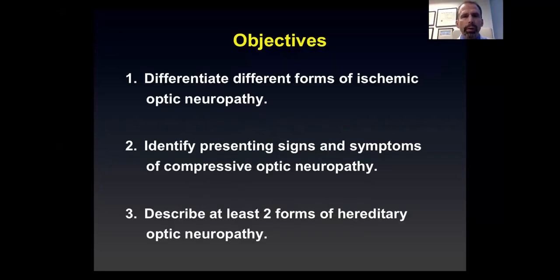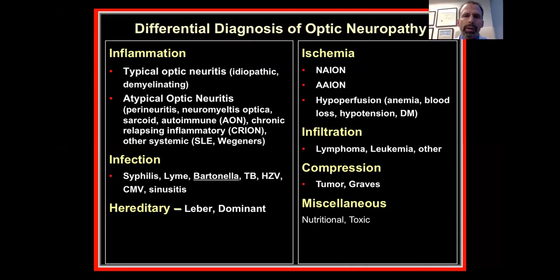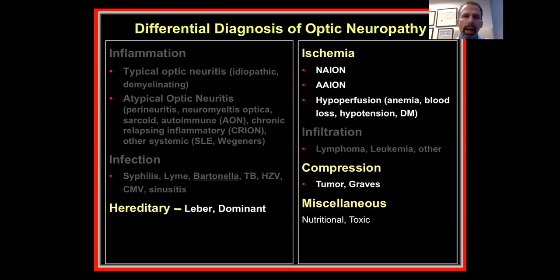My objectives for this webinar: when we're done, you'll be able to differentiate different forms of ischemic optic neuropathy, identify presenting signs and symptoms of compressive optic neuropathy, and describe at least two forms of hereditary optic neuropathy. The differential diagnosis is complicated. Last time we talked about inflammation and infection; this time we're going to concentrate on the ischemic, hereditary, compressive, and some miscellaneous causes.